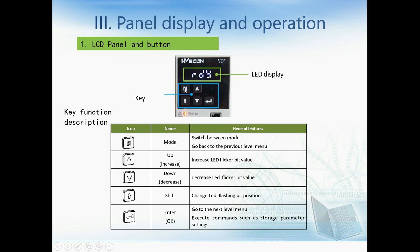This is the LCD panel and buttons. Just like most servo drives in the market, there is an LED display and five buttons. The first button is the M switch, used for switching between modes or going back to the previous level menu. The up button increases the LED flashing bit value, and the down button decreases it. Another button changes the LED flashing bit position. The last one is the Enter button for going to the next level menu or executing commands such as storing parameter settings.